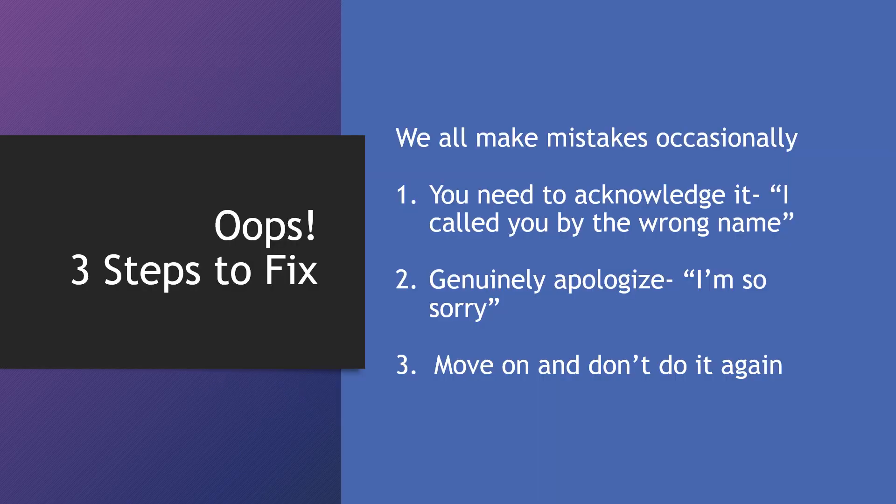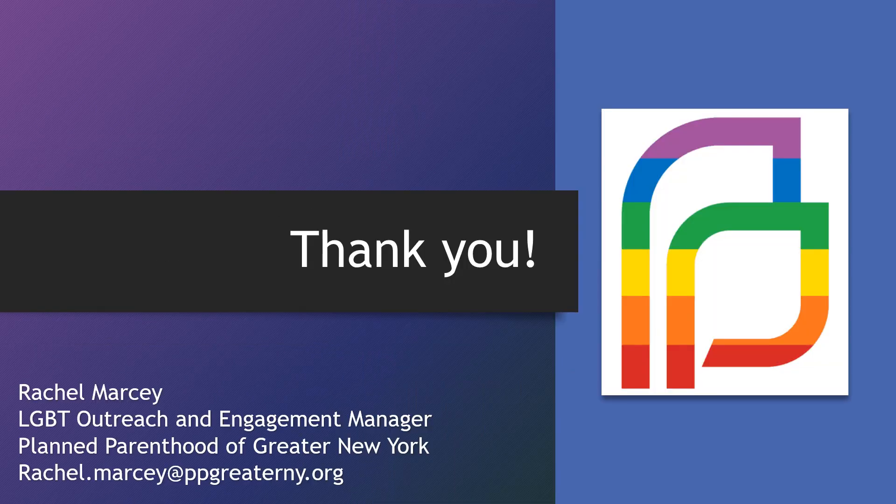This is all about treating people with respect and common courtesy. What is respect? It is showing someone that they are worthy of your attention and your concern — showing someone that you consider them to be important and have value. So what happens if we make a mistake? We all make mistakes occasionally. Three steps to fix a mistake: acknowledge it — 'I called you by the wrong name'; genuinely apologize — 'I'm so sorry'; and move on — don't do it again. Please remember, the work you're doing really matters. Your kindness, compassion, and knowledge can make a difference in someone's life.